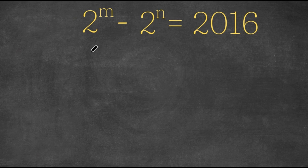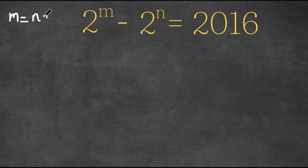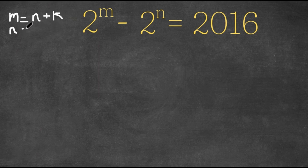So what I'm first going to do is I'm going to set m equal to n plus k, k being a constant. Now, if this is true, then we also know that n is equal to m minus k, and k is a constant.